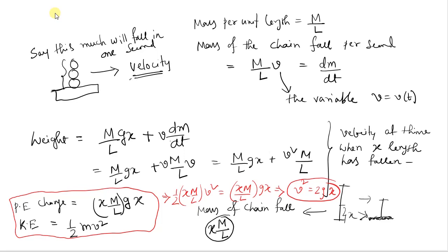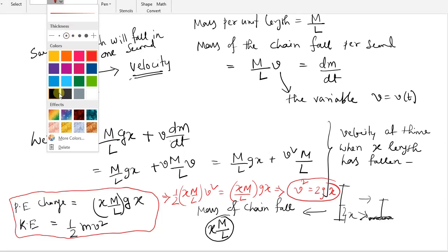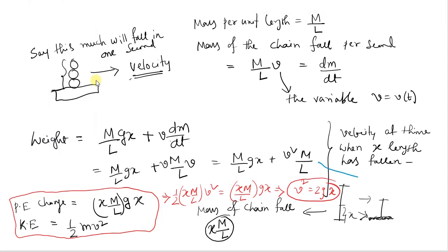So using this result, the weight is M by L times gx plus - you put v squared here - 2gx times M by L. So this comes to 2gx M by L. We will add these two and the final result will be: weight equals 3Mgx by L. So this is the answer.